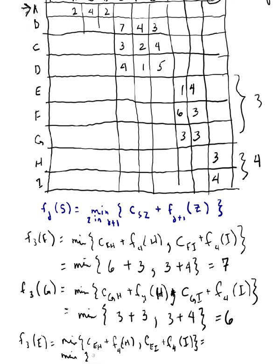Okay, I've lost it here. E to H is 1, plus the cost F4 of H was, I can see that right there, it's 3. And E to I is 4, plus the optimal cost from I to destination is 4. So I have the min between 4 and 8, so that equals 3.